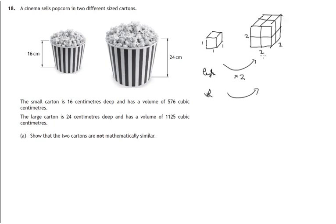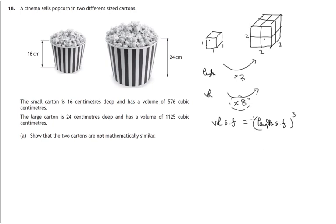To get volume, it's length times breadth times height, and each of these factors has been doubled — we double the length, the breadth, and the height. So we've multiplied the volume of the small one by eight to get the larger one. You'll notice that to get the volume scale factor, we have cubed the length scale factor. That's an absolutely crucial fact for solving both parts of this question: the volume scale factor, provided the two solids are mathematically similar, will be the length scale factor cubed.